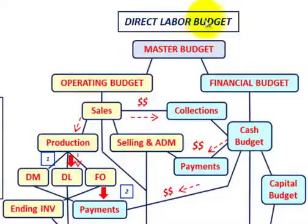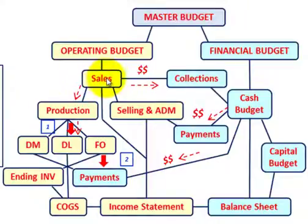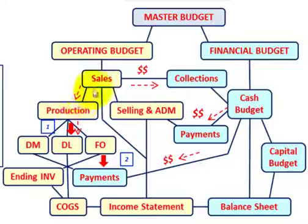We're going to be going over a direct labor budget and work through an example to make the necessary calculations. We start with our master budget, which contains our operating budget and financial budget. Following the operating budget, we determine our sales budget, then our production budget, and from there we can calculate our direct labor budget based on production requirements, which are based on sales requirements.